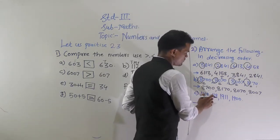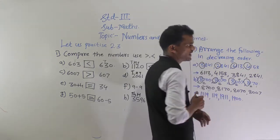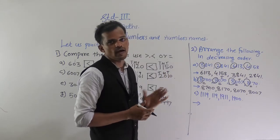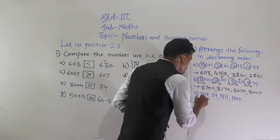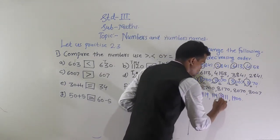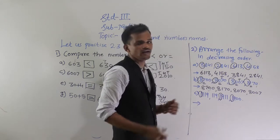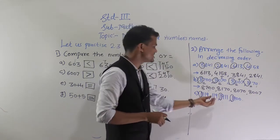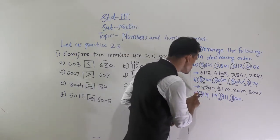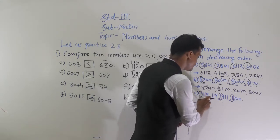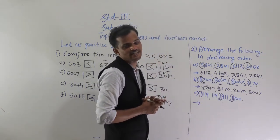Next, arrange 1119, 119, 1911, and 1900 in decreasing order. Compare the thousands place digit. Three of the numbers are 4-digit numbers and 119 is a 3-digit number, so it is the smallest and will come last. Among 1119, 1911, and 1900, the thousands place digit is the same.